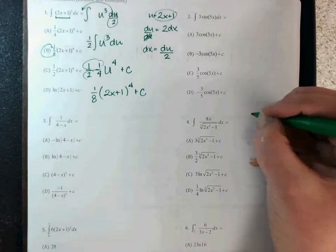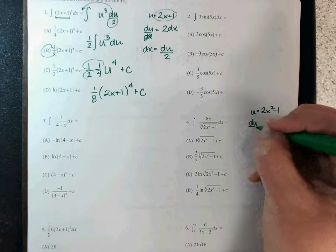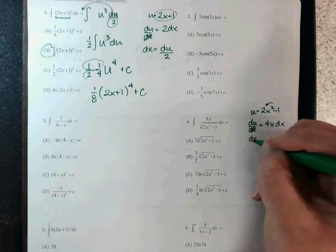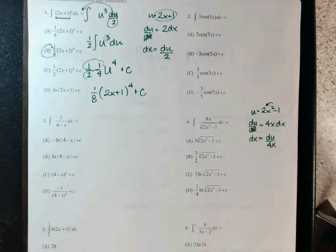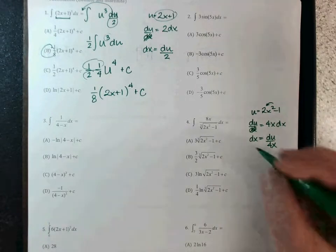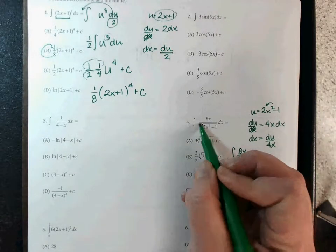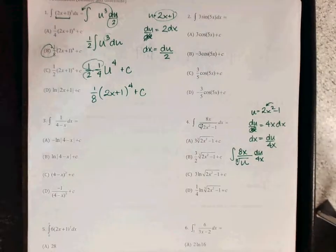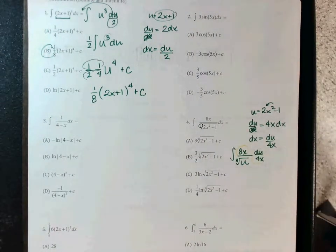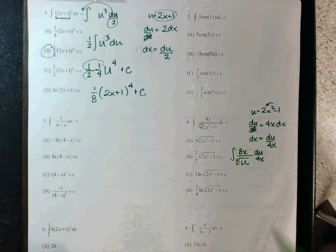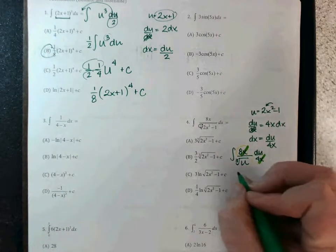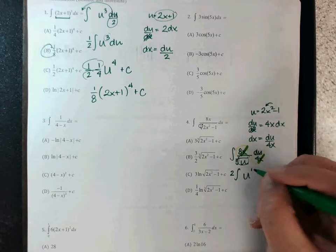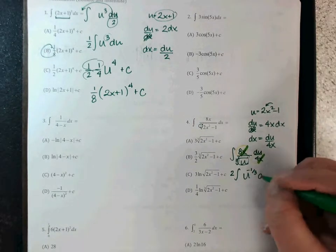Let's do a harder one — number four. Your u is going to be the middle part: 2x² minus 1. So du/dx is 4x — take the 2, multiply it down. Move dx up and 4x down, so dx is du over 4x. Rewrite the integral: 8x over the cube root of u, then du over 4x. The x's cancel, and 8 divided by 4 pulls a 2 to the front. The cube root is a one-third power, but since it was on the bottom, it becomes negative one-third.